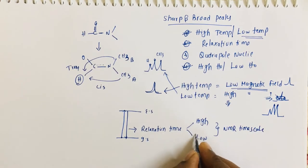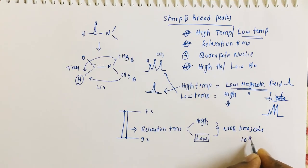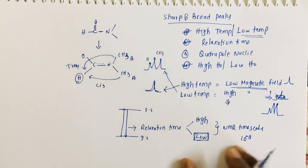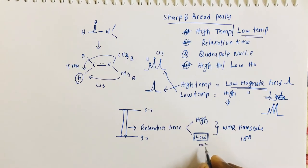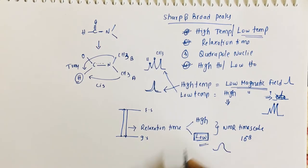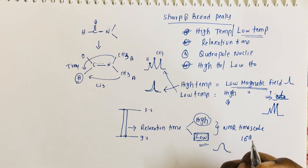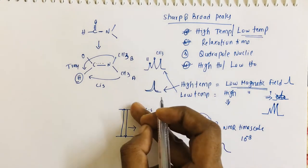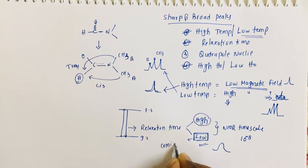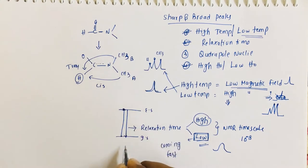When the relaxation time is very low — less than the NMR time scale of 10⁻⁸ — the NMR cannot read the compound clearly and we get broad lines. Low relaxation time means the molecule comes back to the ground state very fast. High relaxation time means the molecule spends some time in the excited state and then comes back slowly.